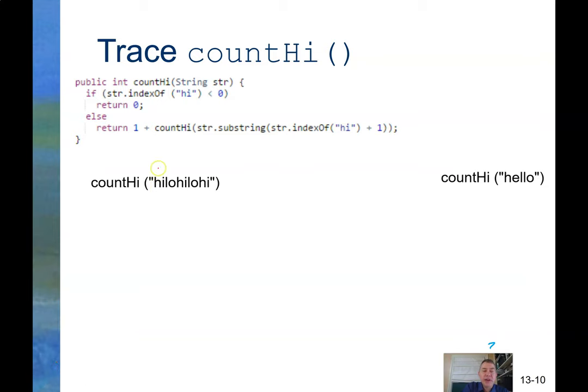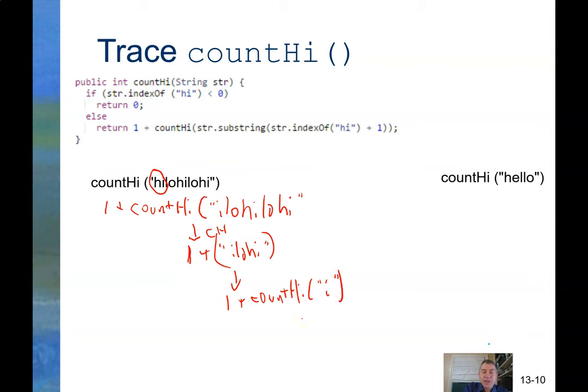It would return, it does find high. It finds high here at 0. And so it's going to return 1 plus count high, starting at the index of it plus 1. So that's going to include the i. i, low, high, low, high. And that's going to move on. Count high is going to return, the word high does appear. It's at index 3. So this will return 1 plus i, low, high. Count high of that. Which will return 1 plus count high of whatever's remaining, which in this case is just going to be the string i, high, which has no count high, which does not have the word high in it. So this is 0. That returns 0. This returns 1. This returns 2. This returns 3.